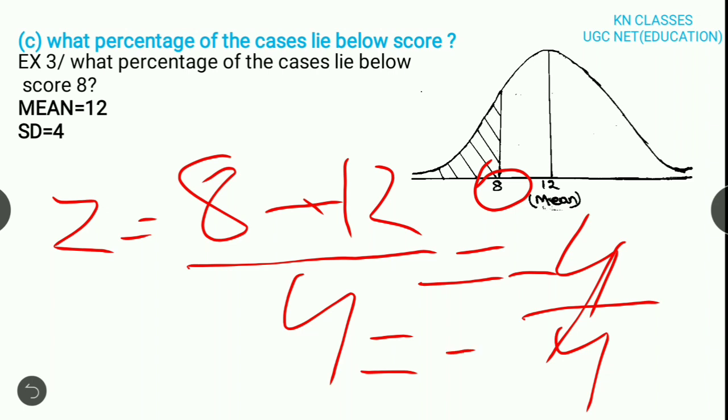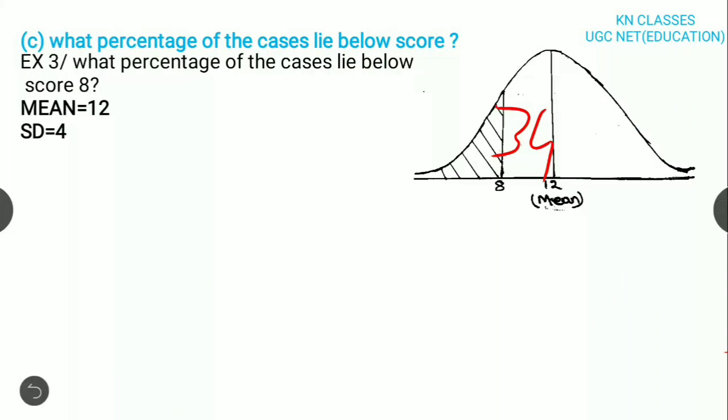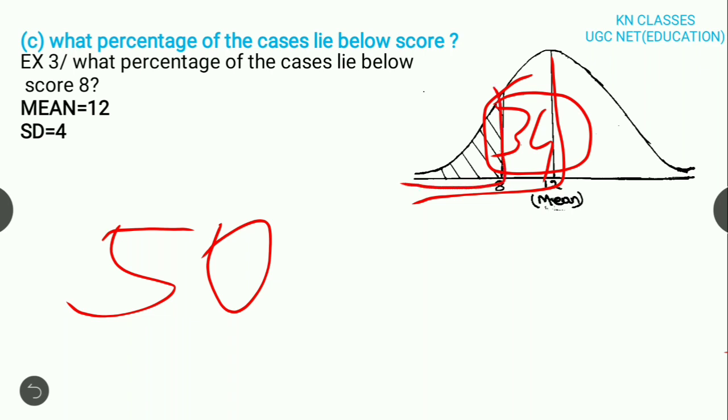8 minus 12 is minus 4 and minus 4 divided by 4 is minus 1. You know that minus 1 table value is 34%. It means 34% of the cases fall between the score 8 to mean 12. So what we need to do is 50 minus 34. The answer is 16.